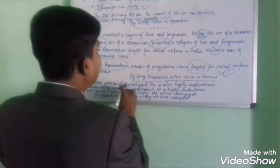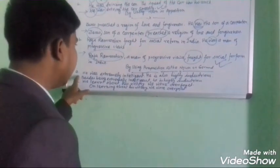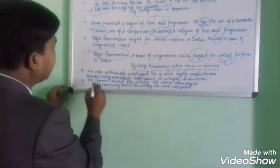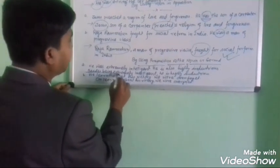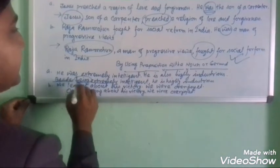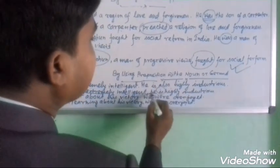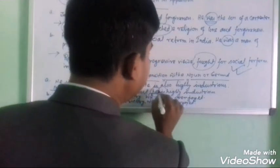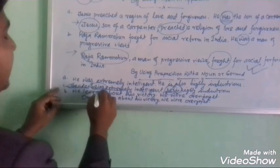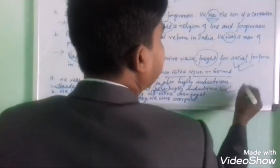For example: 'He was extremely intelligent. He is also highly industrious.' Joined: 'Besides being extremely intelligent, he is highly industrious.' Here 'besides' is the preposition and 'being' is the gerund. 'He' is the subject and 'is' is the finite verb — one subject, one finite verb. It is a simple sentence.